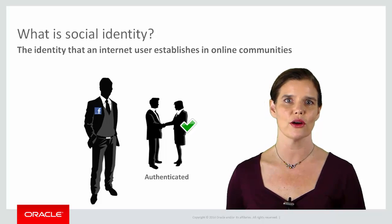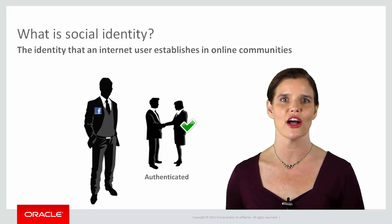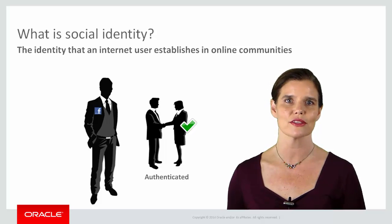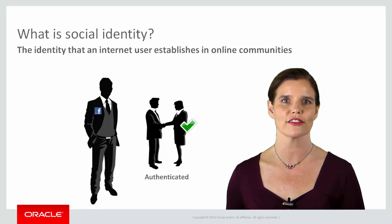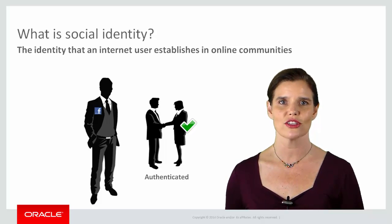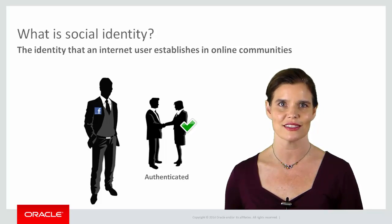Likewise, when you enable a user to login by using a social identity, you trust that the online community is correctly identifying that person. Of course, if you are protecting sensitive data, you need to provide a more secure method of authenticating users. However, for many mobile apps, you simply want to track the users who are accessing the application. Providing social identity login is a convenient way to implement authentication for low-risk applications.